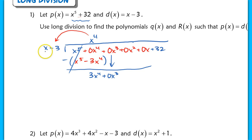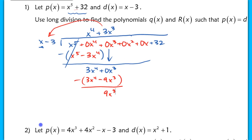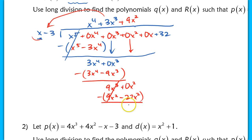How many times does x fit into 3x to the 4th? It fits in 3x to the 3rd times. I find the product: 3x to the 4th minus 9x to the 3rd. I subtract, and 0x cubed minus negative 9x cubed gives positive 9x cubed. I bring down 0x squared. How many times does x fit into 9x cubed? It fits in 9x squared times. Multiply out: 9x squared minus 27x squared. Subtract — first terms cancel, leaving positive 27x squared.